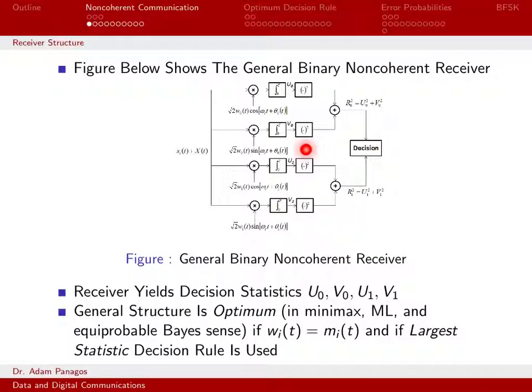Most of the schemes we've looked at so far, when I've had two signals, I would just have a single correlator branch for S0 of T and a single correlator branch for S1 of T. Here, I have two branches for S0 of T and two branches for S1 of T. And the reason I'm doing that is because this is a non-coherent scheme.